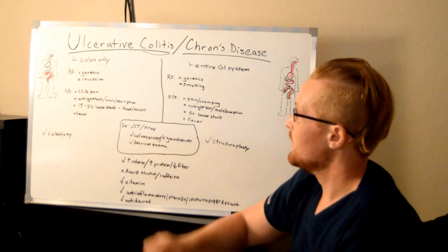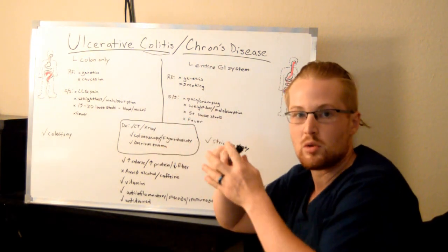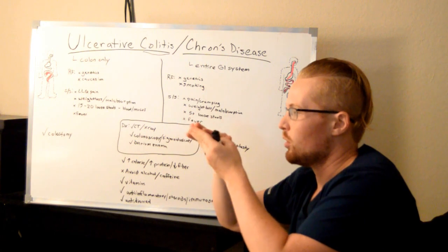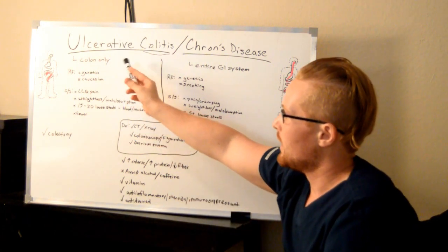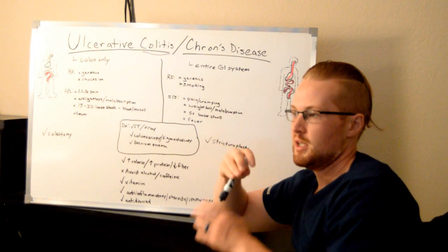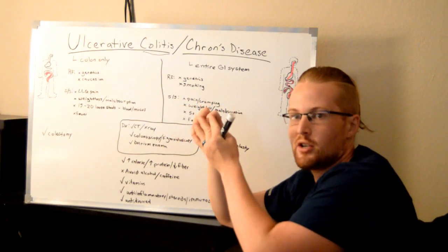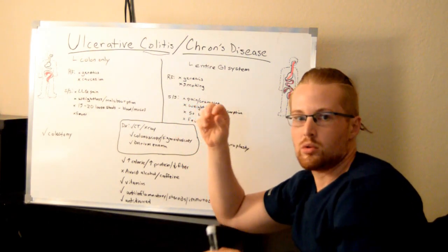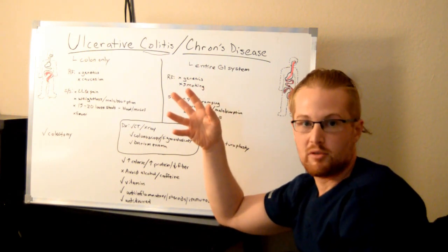Ulcerative Colitis will have ulcerations — little pocketing and holes and damage to the lining of the colon. Crohn's Disease will typically involve scarring and narrowing of whatever bowel, esophagus, or whatever part of the GI system it happens to affect.